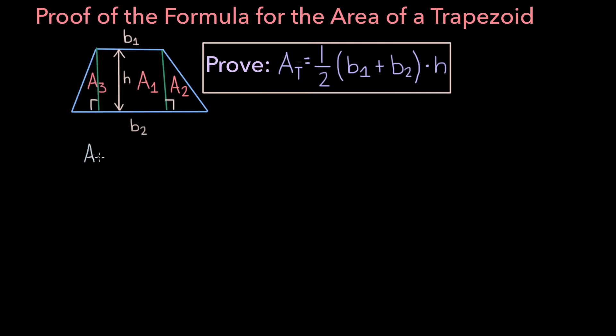And now, the area of our trapezoid can be rewritten as A1 plus A2 plus A3. Now before we get into determining what each of these areas actually is, let's assign a variable to the bases of each of our triangles. Let's call the base of our triangle with area A2, x, and the base of our other triangle, y.